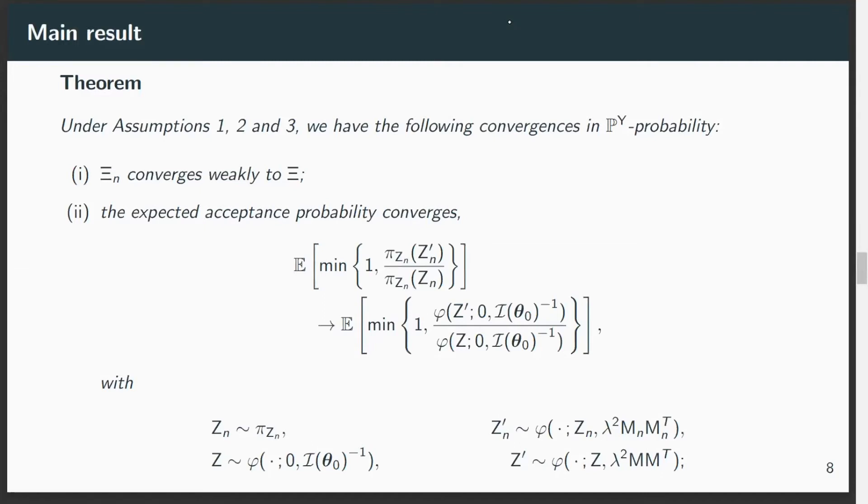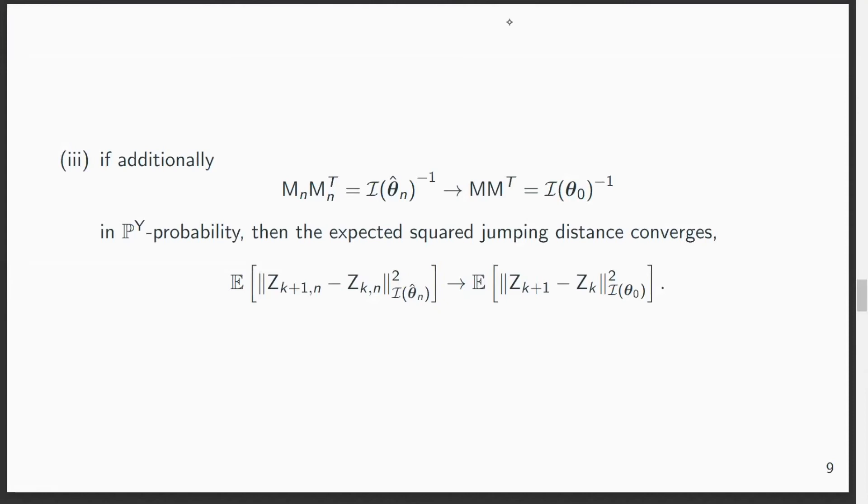As a first interesting point, we can say that indeed the distributions of the Markov chain converge to the distribution of the limiting Markov chain. But more than that, we can also show that the expected acceptance probability converges as well, which is very good because as we said earlier, this is what we use to tune the algorithm. But most importantly, we can show that the expected squared jumping distance also converges in the case where we have n going to infinity as opposed to d going to infinity. That is very important because we can now use the same kind of arguments that have been used in the past to derive formulas to optimize in the limit as a substitute.